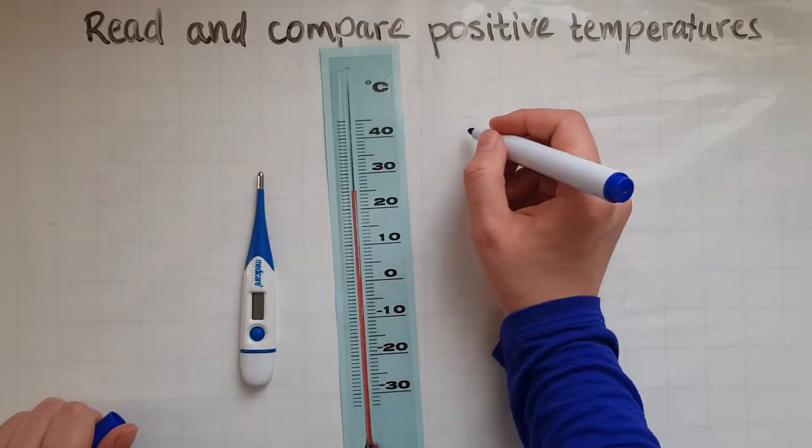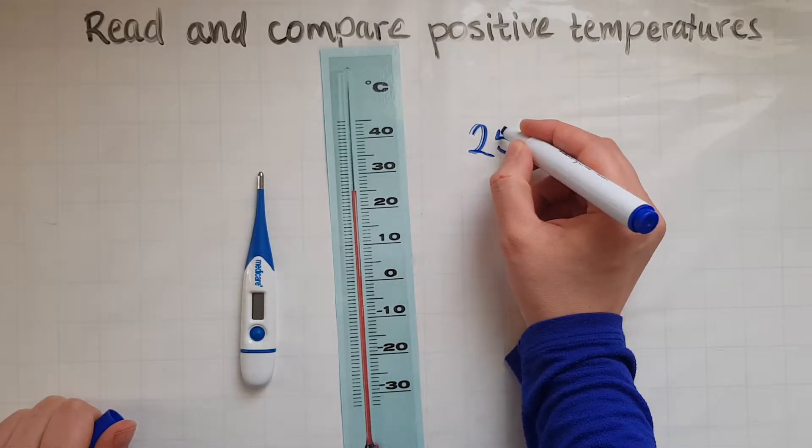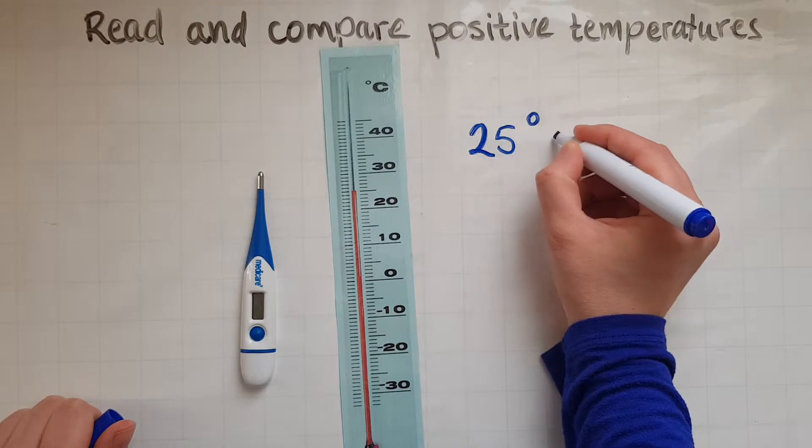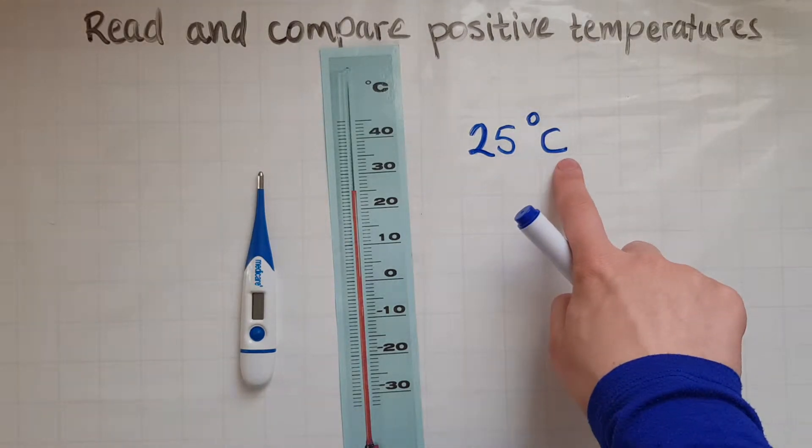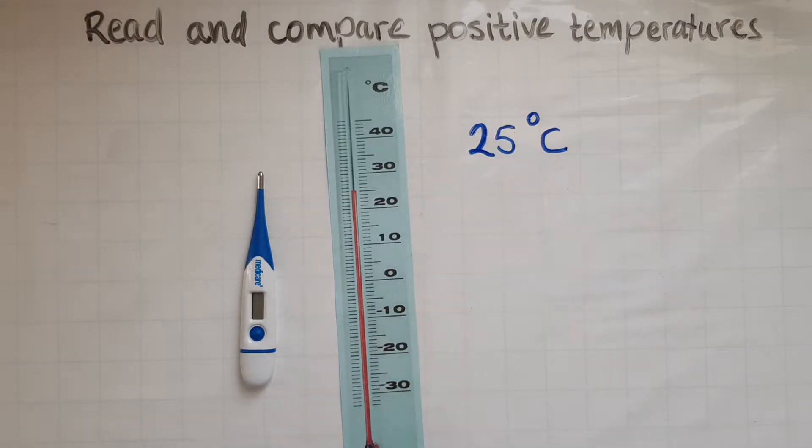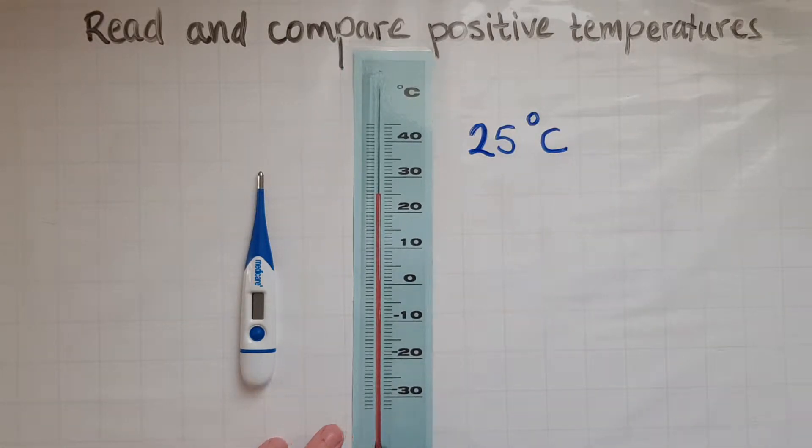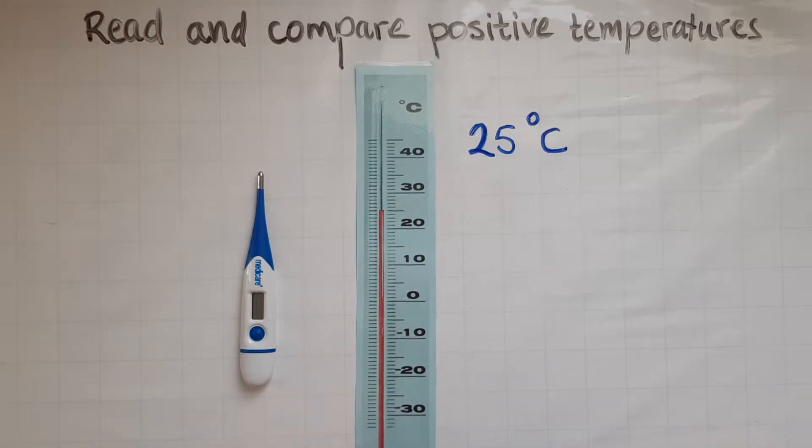So I'll write that down: 25 degrees Celsius. So that's the short form for Celsius and that's the degree symbol. So this is 25 degrees Celsius. It's supposed to be a weather thermometer.